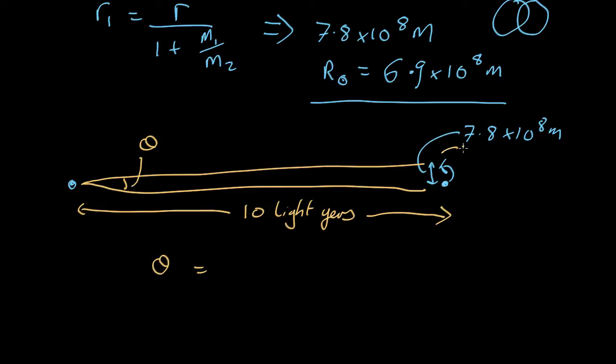Now, if you remember, we can use a small angle approximation, which is that the angle in radians equals R1 over the distance D. That's going to be about 7.8 × 10⁹ meters over 10 light years, which is about 10¹⁷ meters. That gives us the angle in radians.